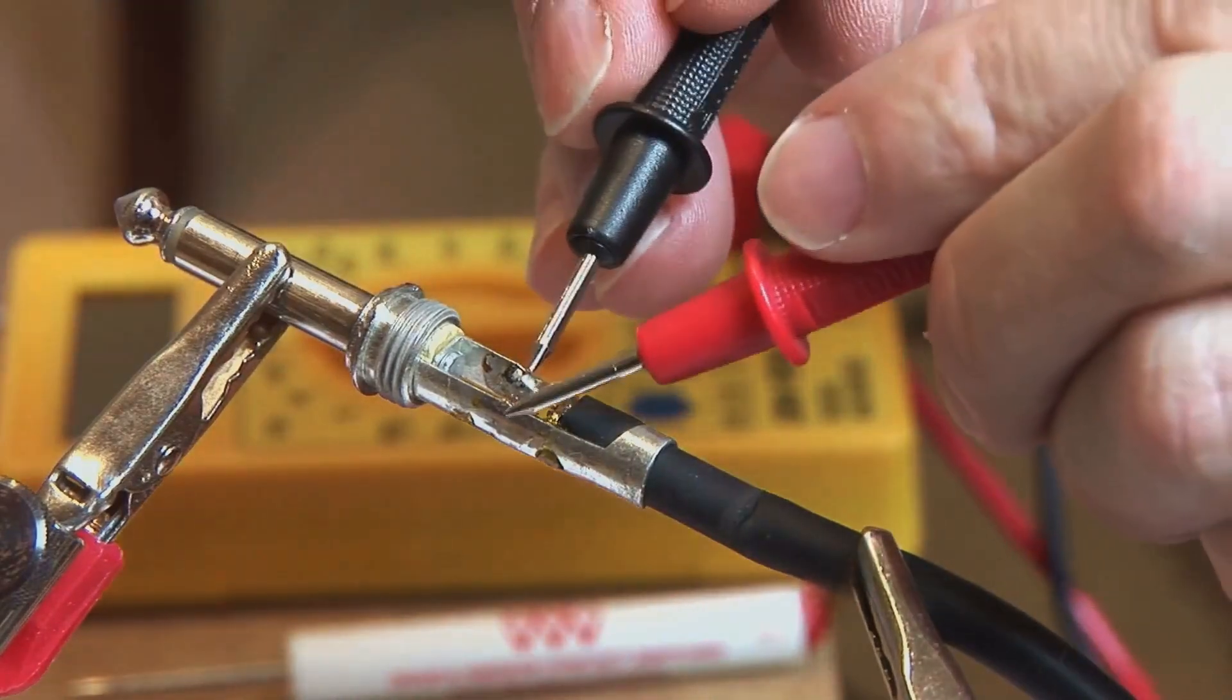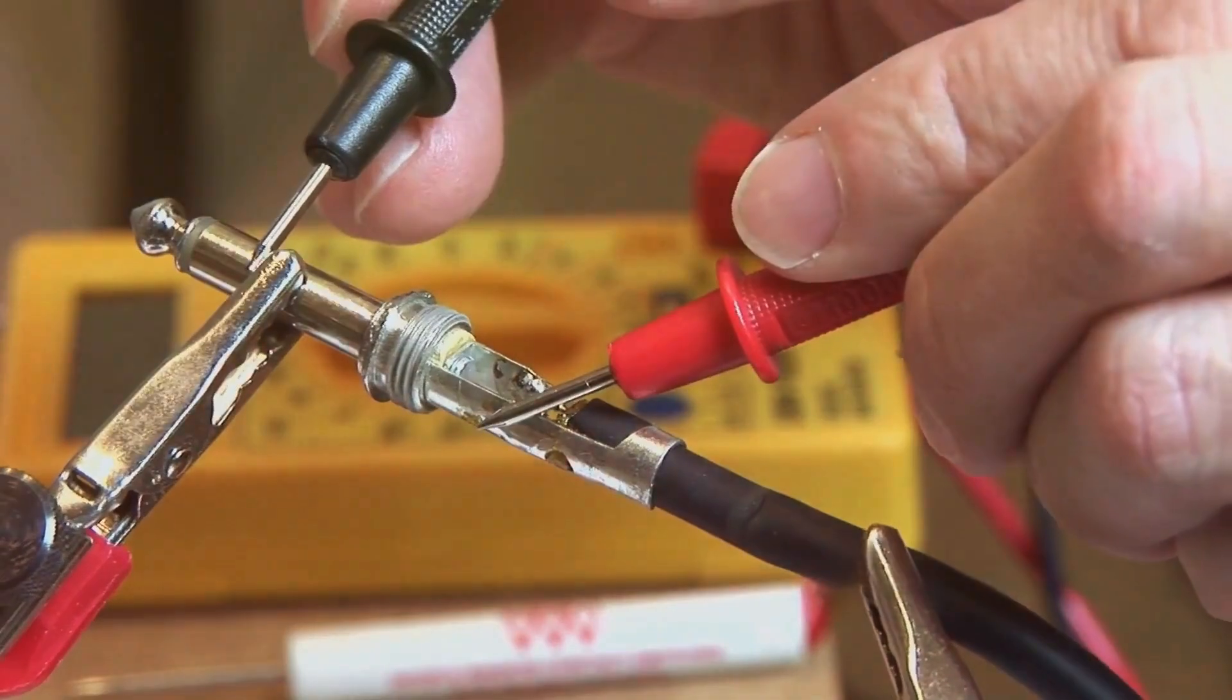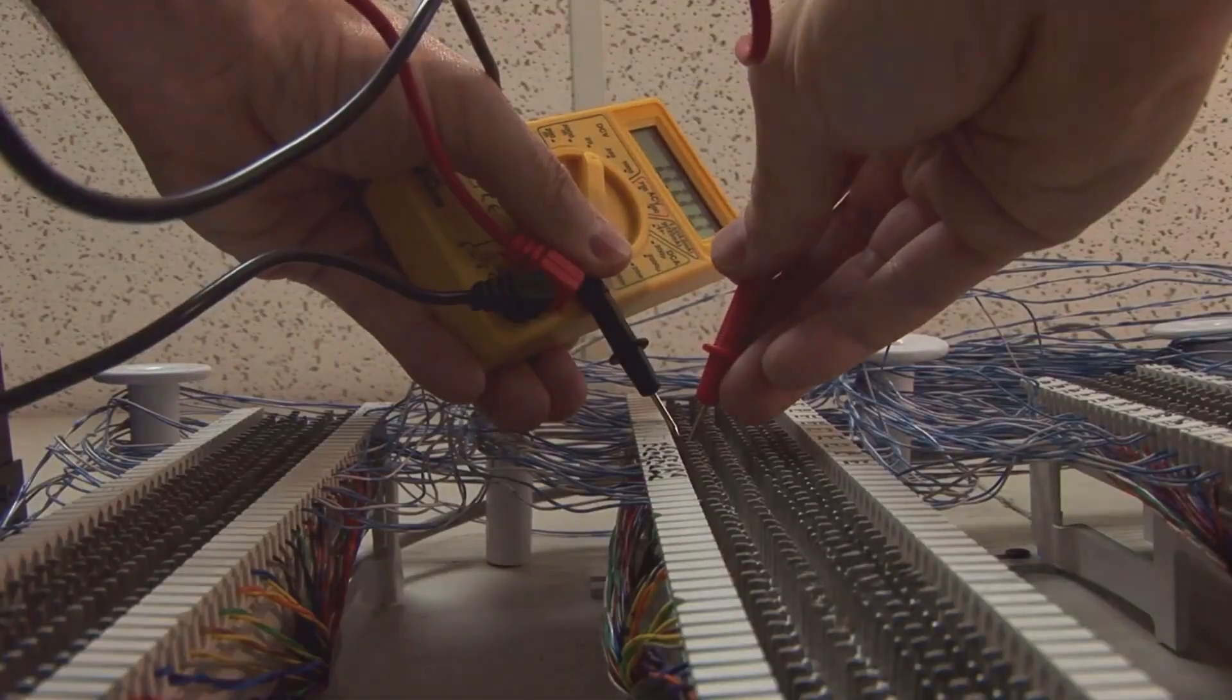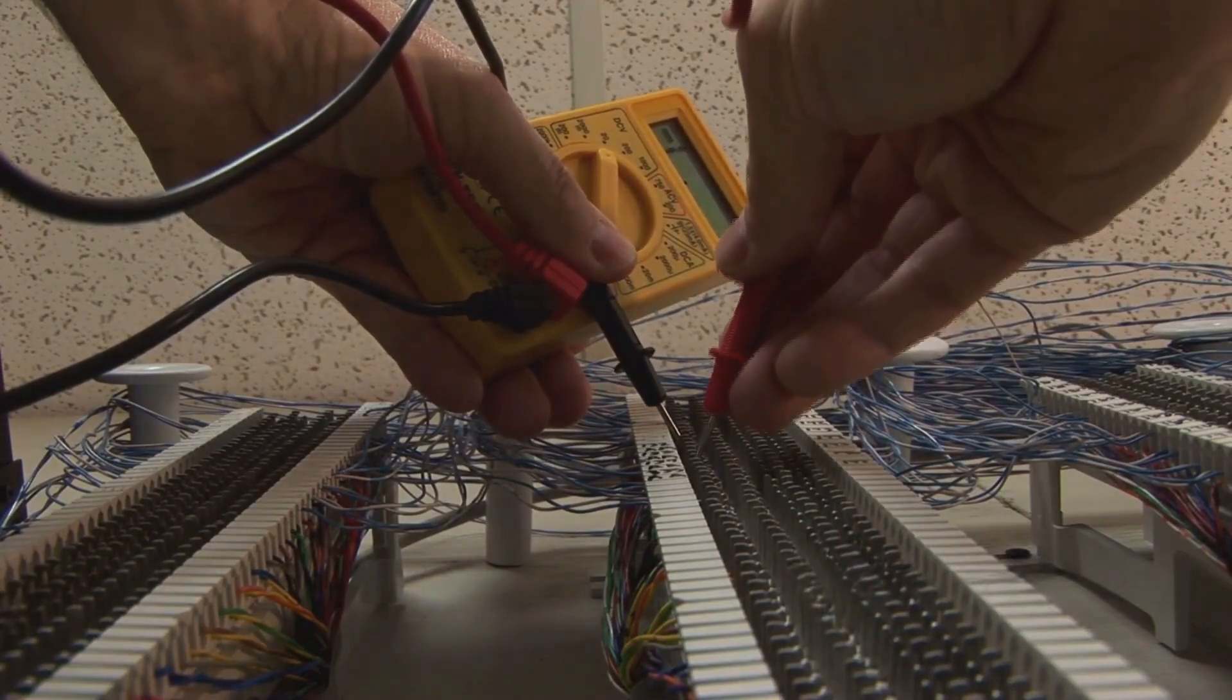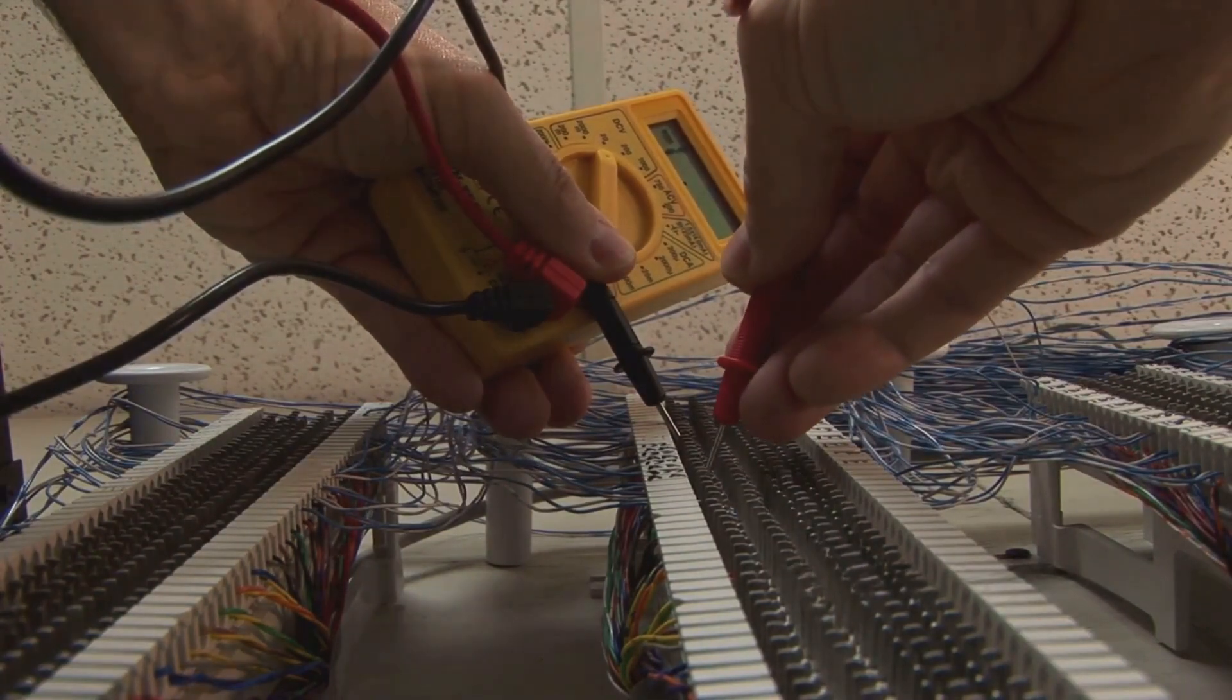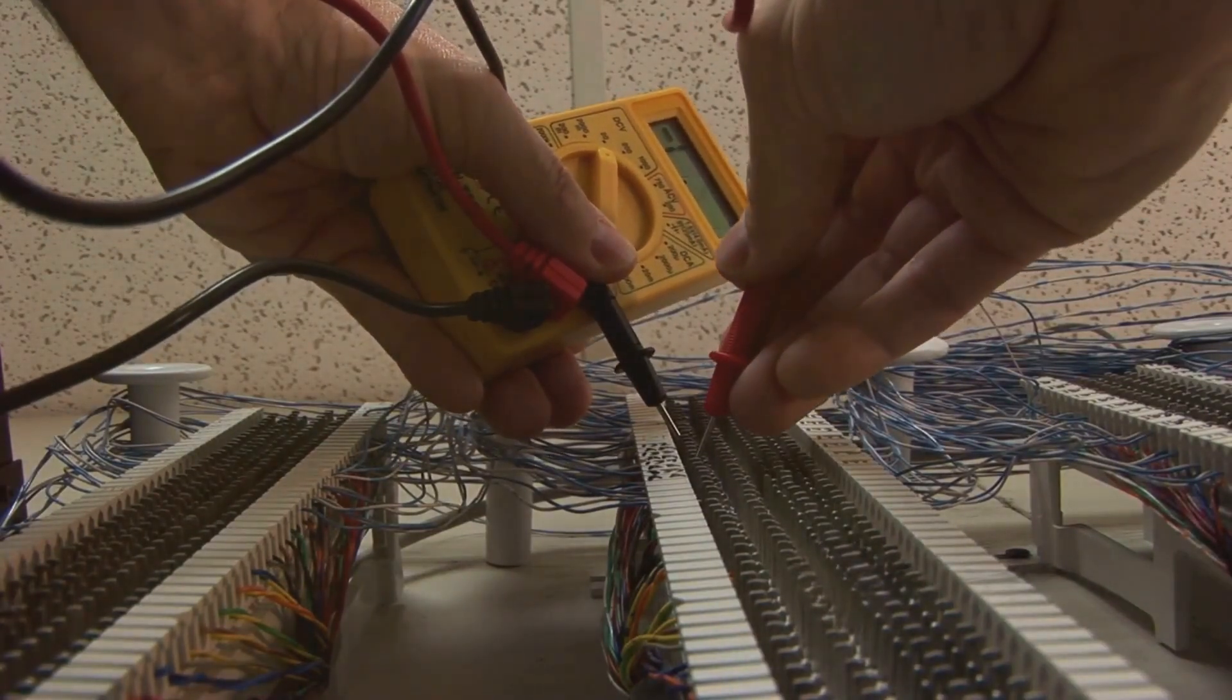Locate the fuses, which usually look like small glass tubes. They are often easy to spot once you have the back cover off. If any are blown, replace them with fuses of the same rating. Using the wrong type of fuse can cause further issues. Reassemble and test your multimeter. If it's still not working, let's go to step 3: the probes.